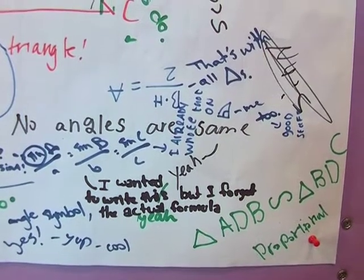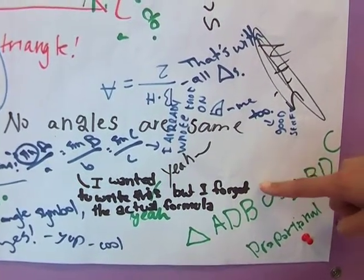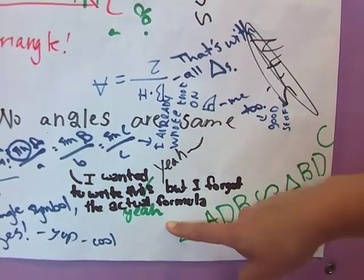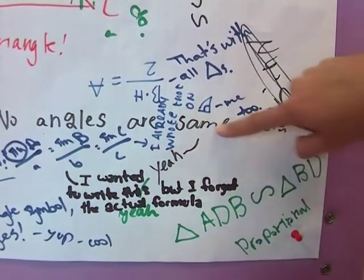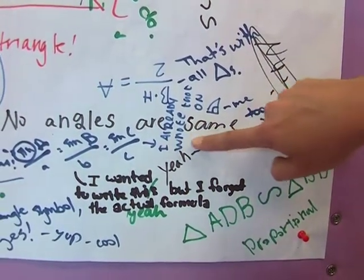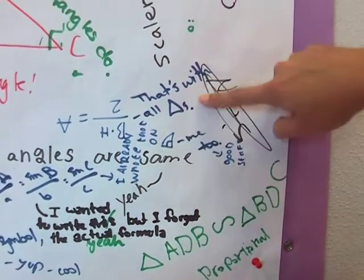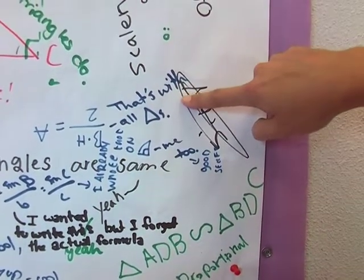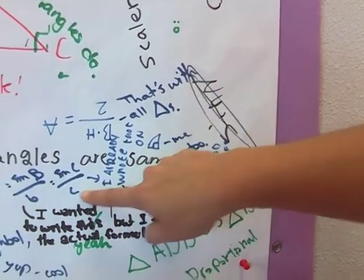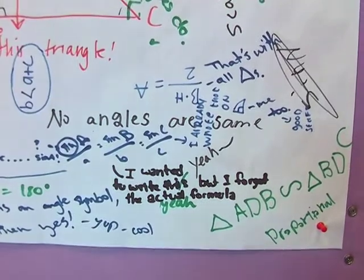Here it's interesting how students said, I wanted to write this but I forgot the actual formula. You have agreement in green, but then someone in blue making the connection, I already wrote this on the right triangle one. Someone else says, no that's with all triangles. And over here, someone else has filled in the formula that the person writing in black had forgotten.